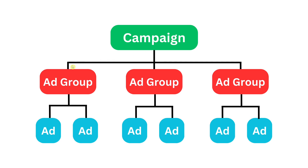Then you have different ad groups, and these groups represent your product or your target group. On this level we basically only speak about the target group, because here we want to make sure that the right people see the right product. For example, for ad group number one we want to sell high heels, and for this we create a target group of people that gets to see this ad.